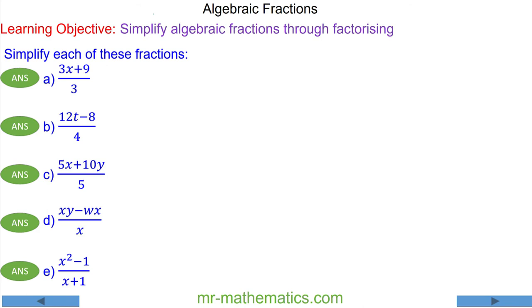Hello, in this lesson we're going to simplify algebraic fractions through factorizing. We begin with question a: we have 3x plus 9 over 3. We're going to factorize the numerator because 3 is a common factor of 3x and 9.